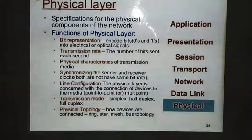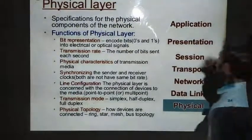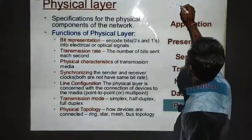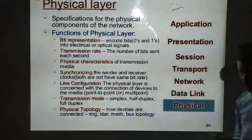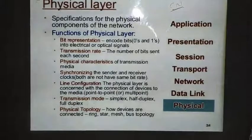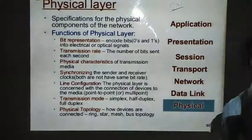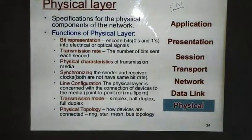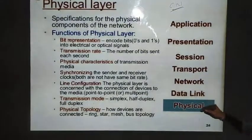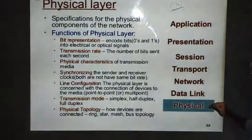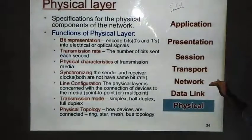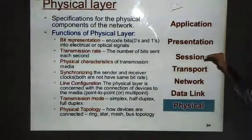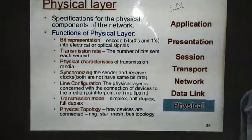Hello students, welcome to the session on computer networks. In our previous session we have discussed about peer-to-peer communication. And before that we discussed the OSI model — the open system interconnection model — which has seven layers: physical layer, data link layer, network layer, transport layer, session layer, presentation layer, and application layer.